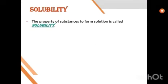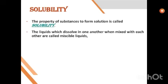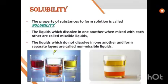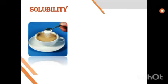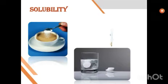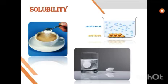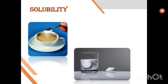Solubility — the property of substances to form a solution is called solubility. Here the solute mixes with the solvent — the liquid part is called the solvent and the solid that dissolves in it is the solute. These pictures depict the solubility of substances — like mixing sugar in tea, or a tablet dissolving in water, forming a solution.